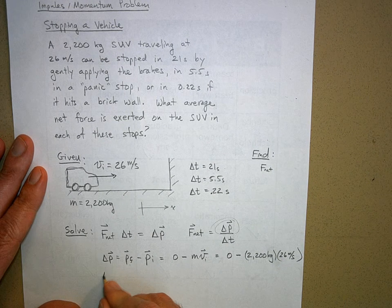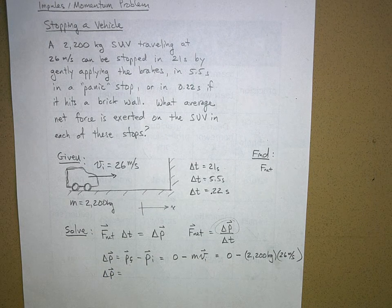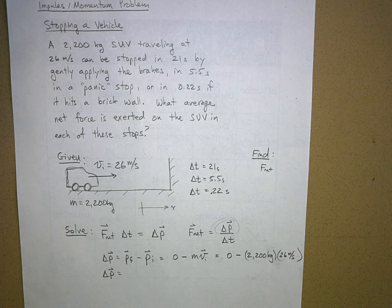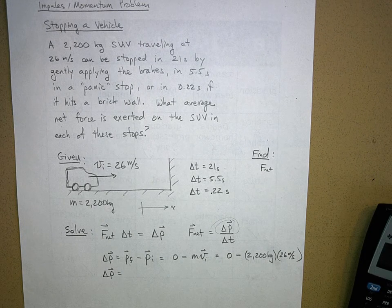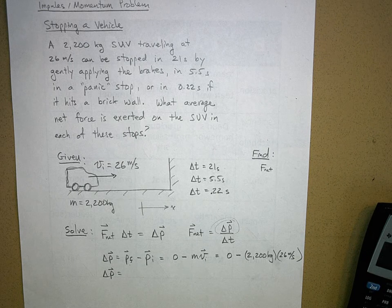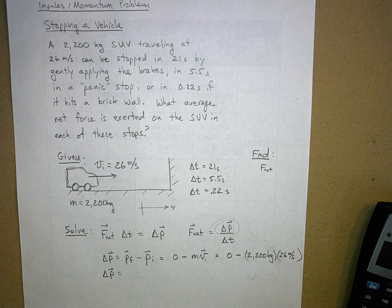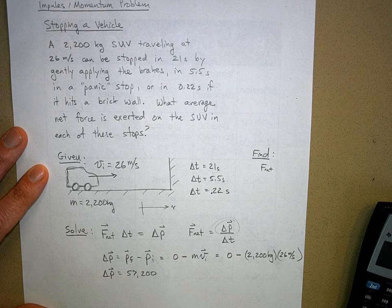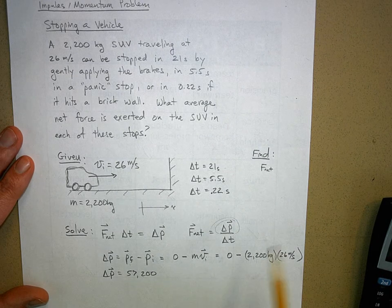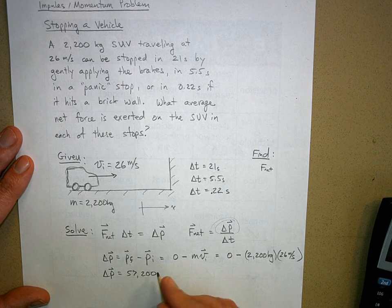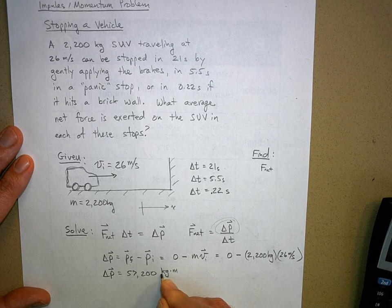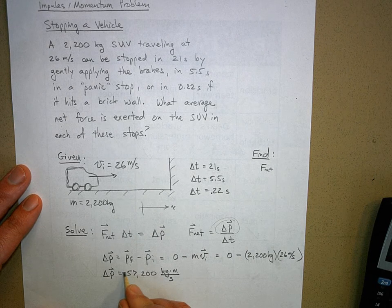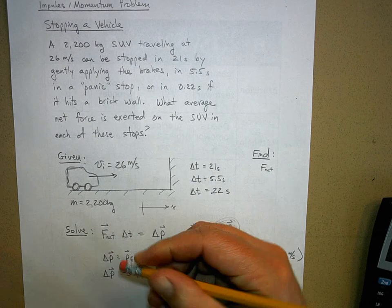So what is this change in momentum? Well, what's 2,200 times 26? 2,200 times 26 is 57,200. What are the units for this? Kilograms times meters per second.